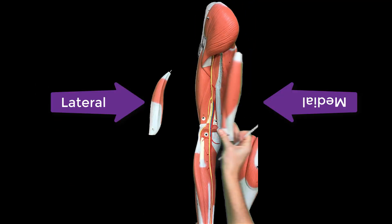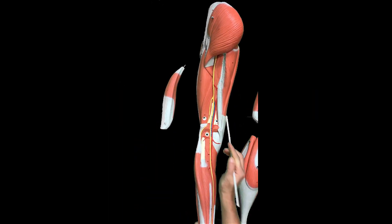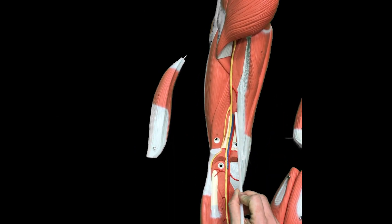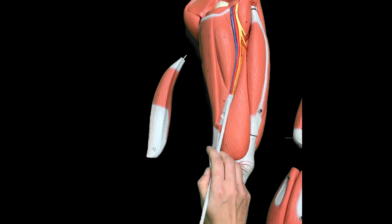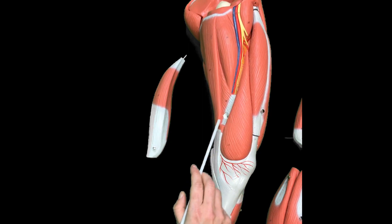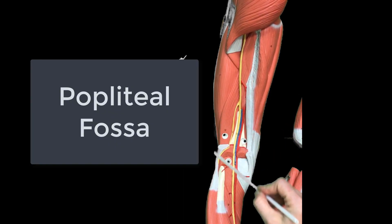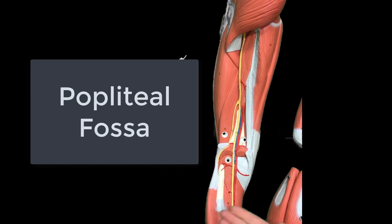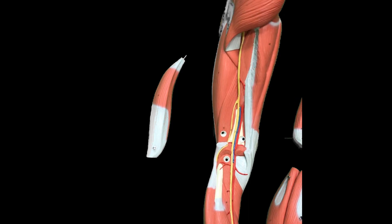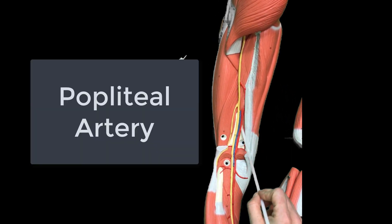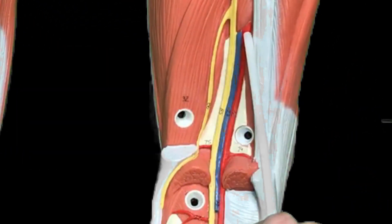We've removed the semimembranosus, semitendinosus, and biceps femoris, exposing the femoral artery. This is where it changes name again — we called it the femoral artery all the way through the thigh, and then it dives through a little canal in the adductor magnus muscle. Once it emerges on the other side, we are in the popliteal fossa — 'fossa' meaning a cavity — and we now call this the popliteal artery.